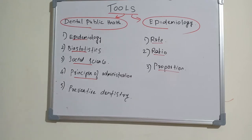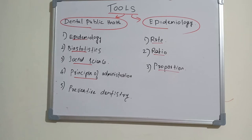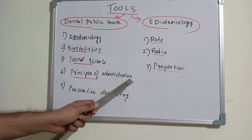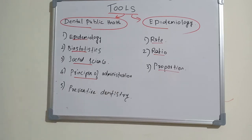The fourth tool of dental public health is administration. When applying a workforce into a large population to conduct a study, there must be proper measures for how the workforce is deployed, categorized into various sections, and managed. Administration is critical — without it, we end up spending a lot of money, time, and workforce without reaching any conclusion.